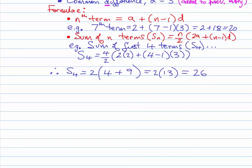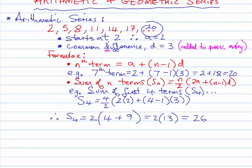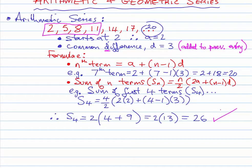So the sum of the first four terms in this arithmetic series is 26. Let's verify: 2 plus 5 is 7, plus 8 is 15, plus 11 is 26. Good — we have that right.